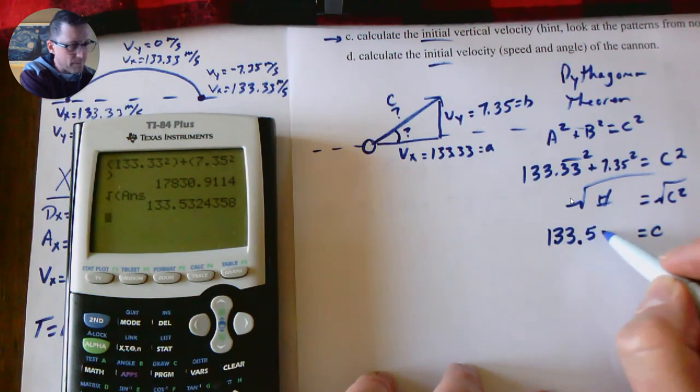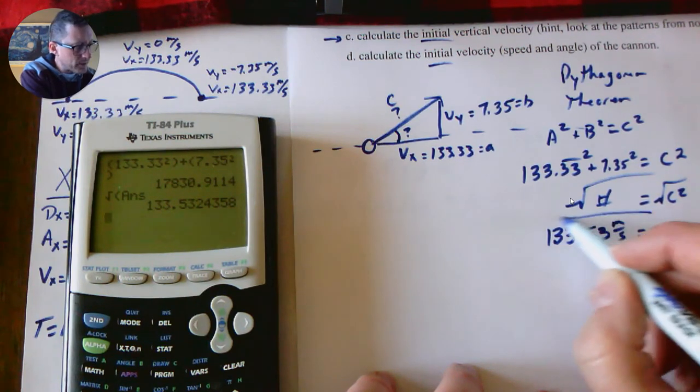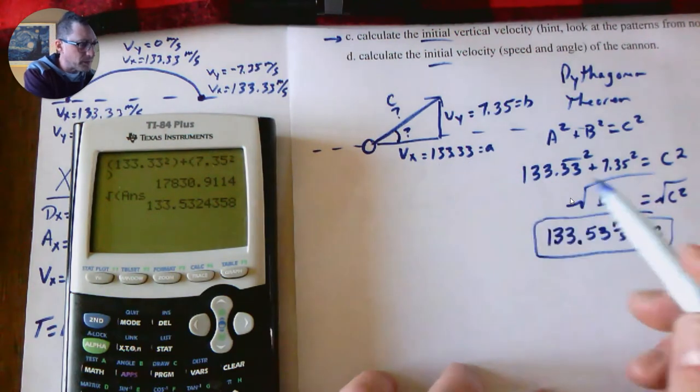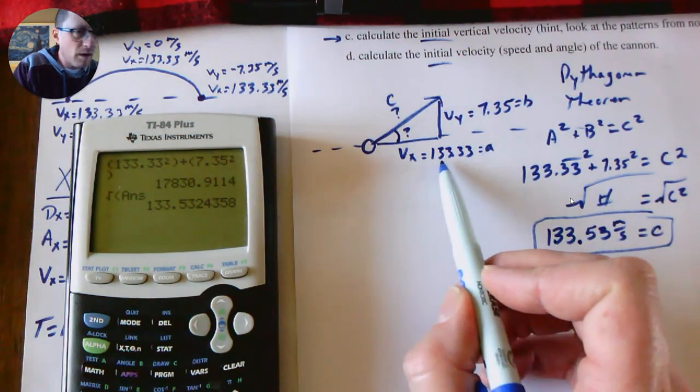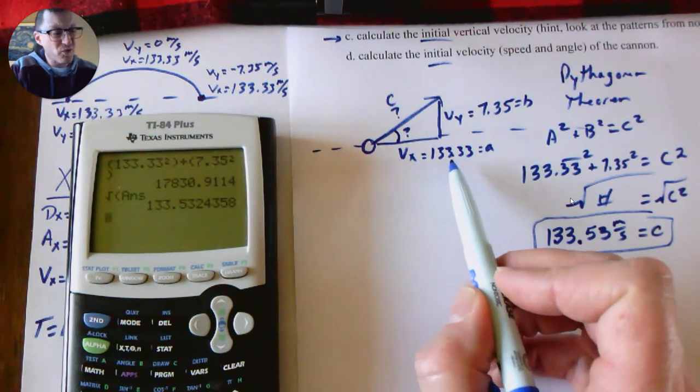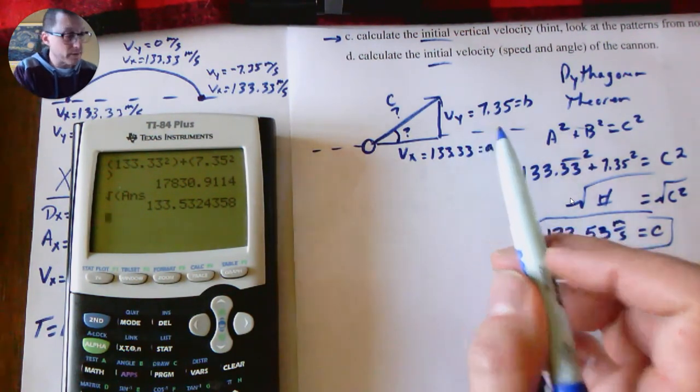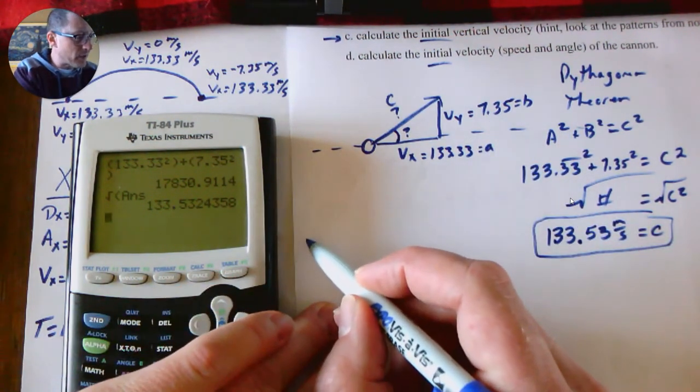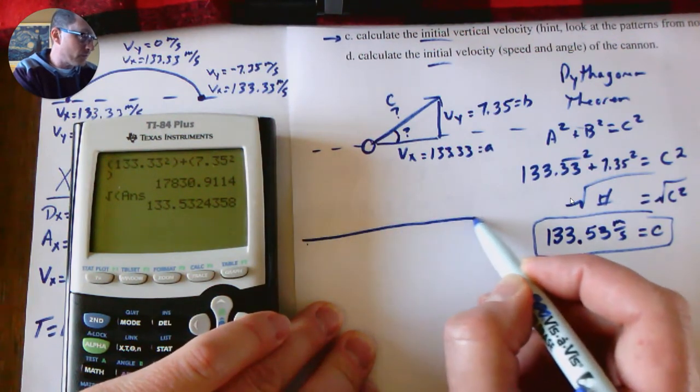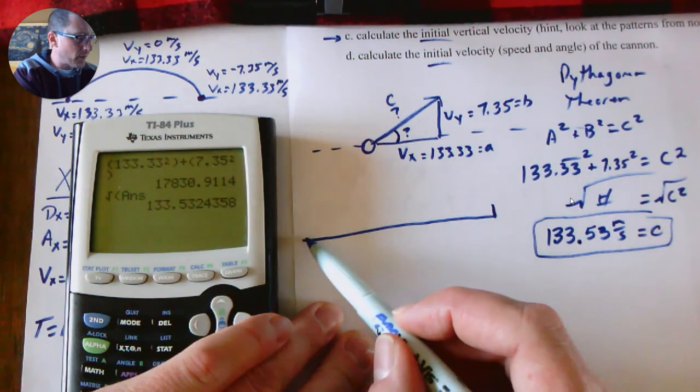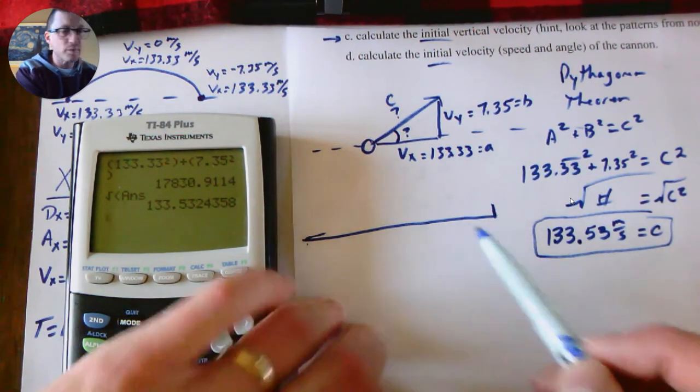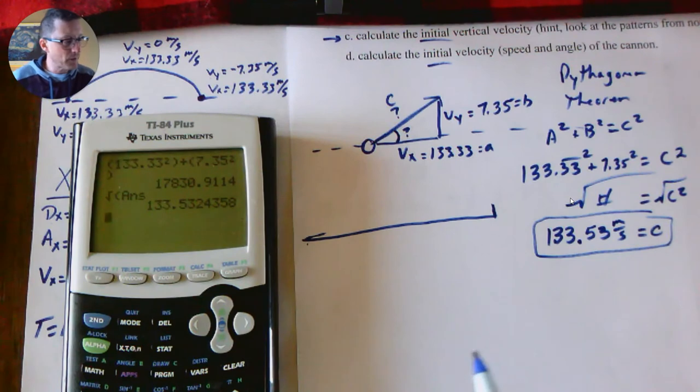You might be looking at that and say, that's the same number. Careful—a little bit different. Notice it's 0.53 now. Why is that number so close to this? If you compare this—if I were really doing this to scale—133 is almost 20 times bigger than this, so it'd be like having a triangle where this is really, really long, this is really, really short. So our hypotenuse is not going to be much bigger than that side.